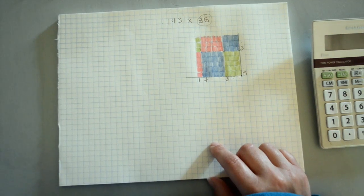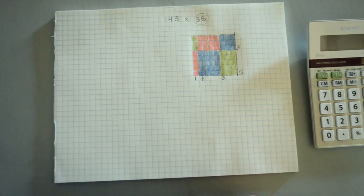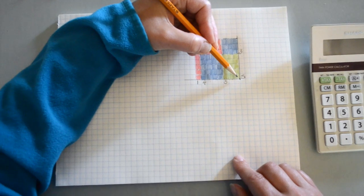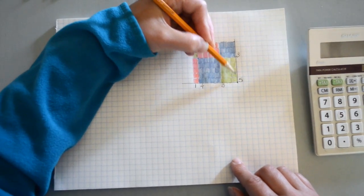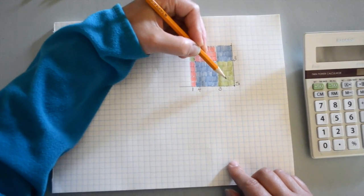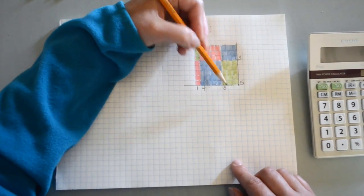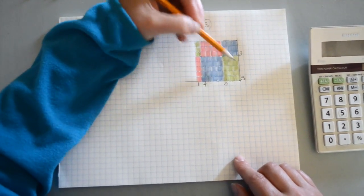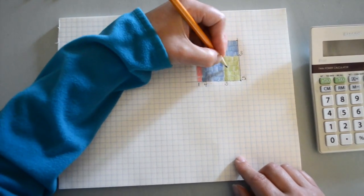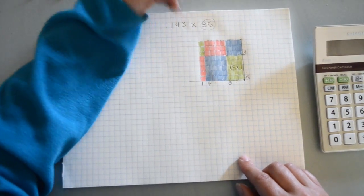Now we have the fun part of counting the squares that each color has made. With base 10 math, we count how many squares we have — and we get 15. Those of us who can multiply 3 times 5 know that that's exactly what we should have: 15 squares. Because this is a unit, we do 15 times 1, which is essentially 15.